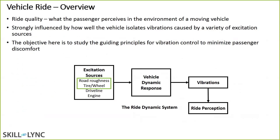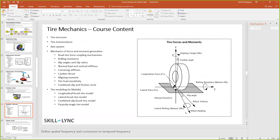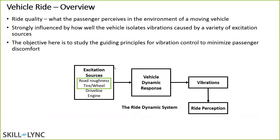Moving on to ride dynamics. This is the isolation we talked about. The ride dynamic system has excitation sources coming from the road, tire-wheel imbalance, driveline, and engine. In this course, we won't go into driveline and engine — those are a different domain. We'll be looking at road roughness and tire-wheel disturbances, studying how the vehicle responds to these inputs, what sort of vibrations result, and what effect that has on the driver or passenger.